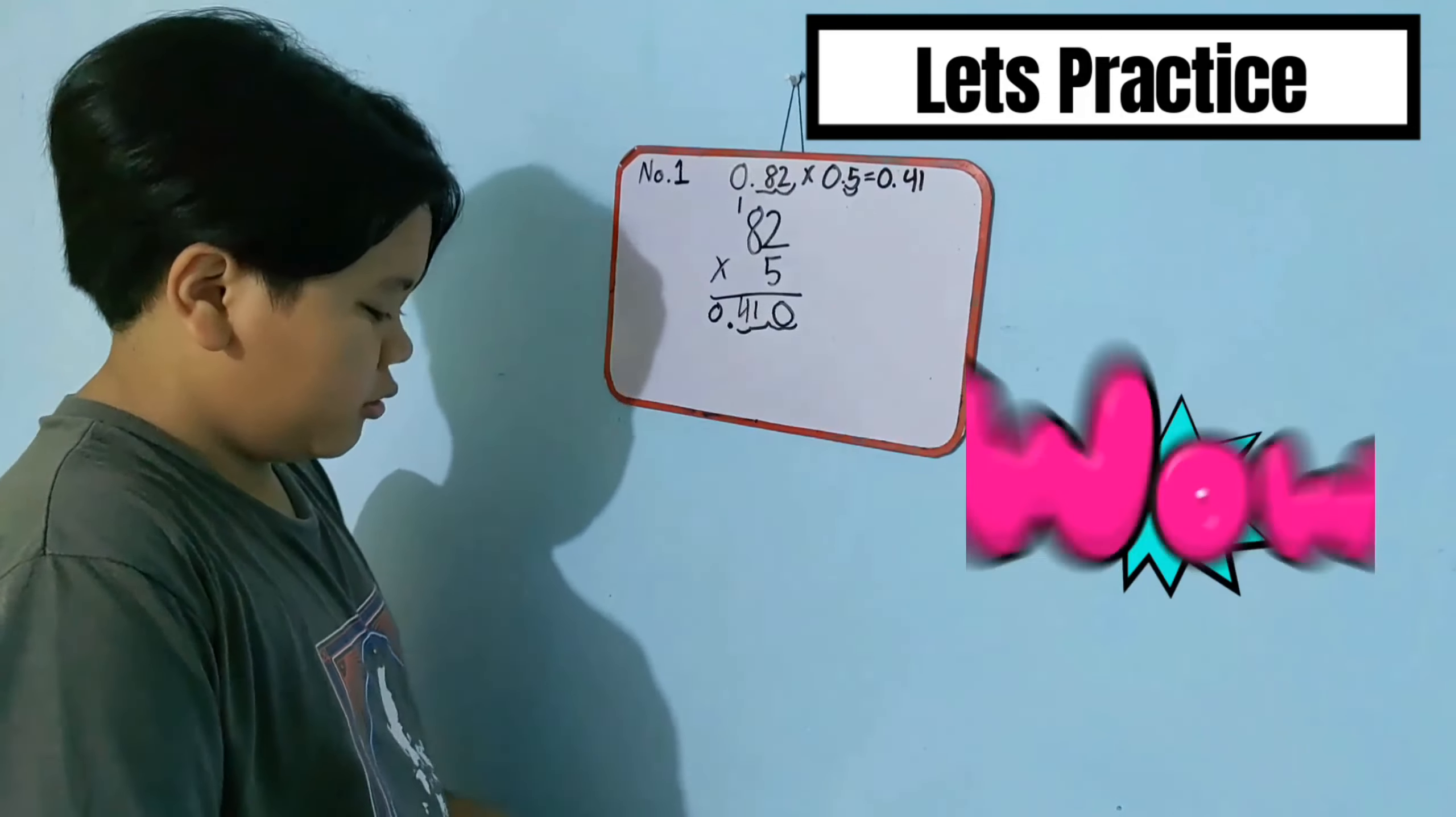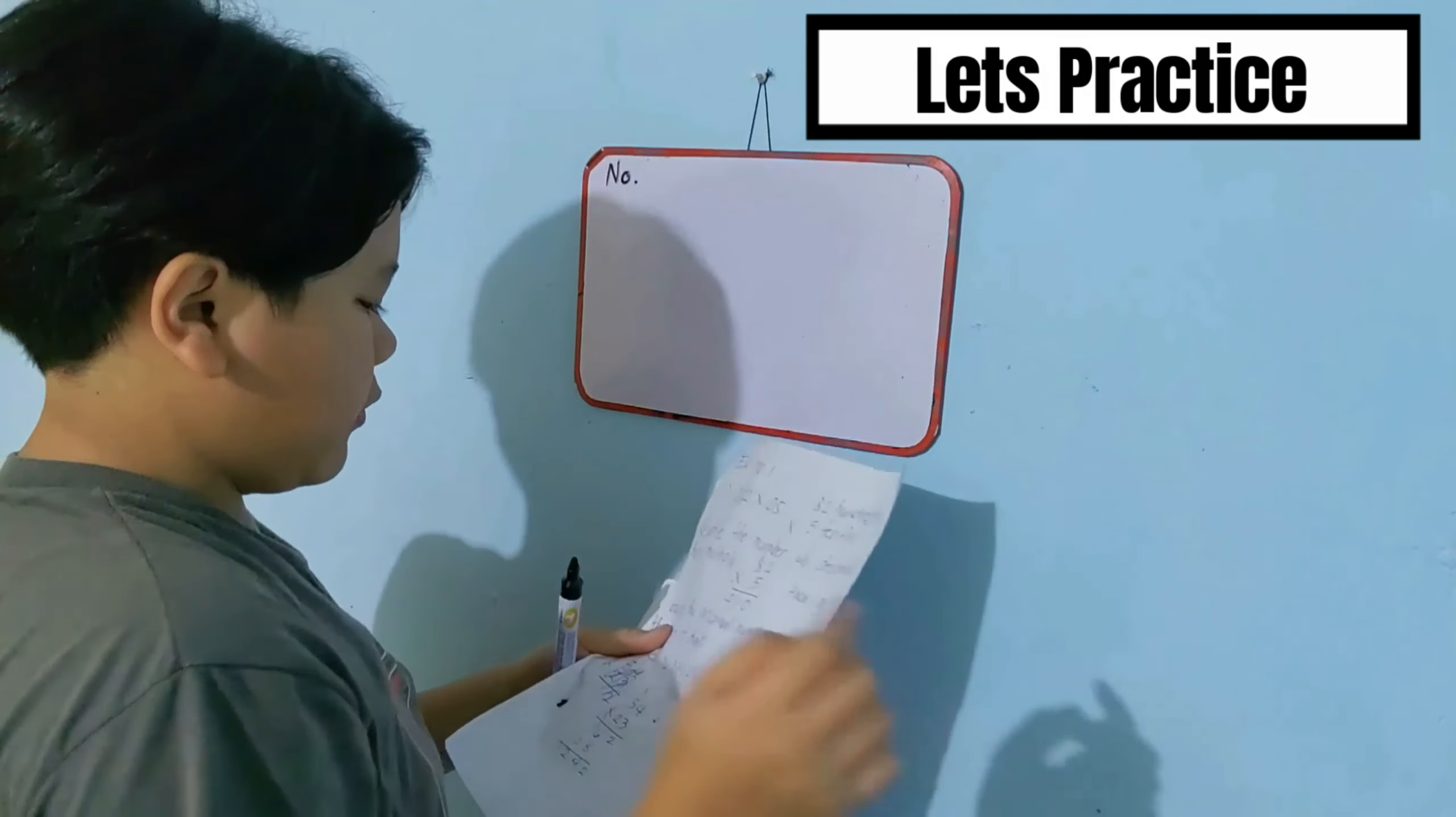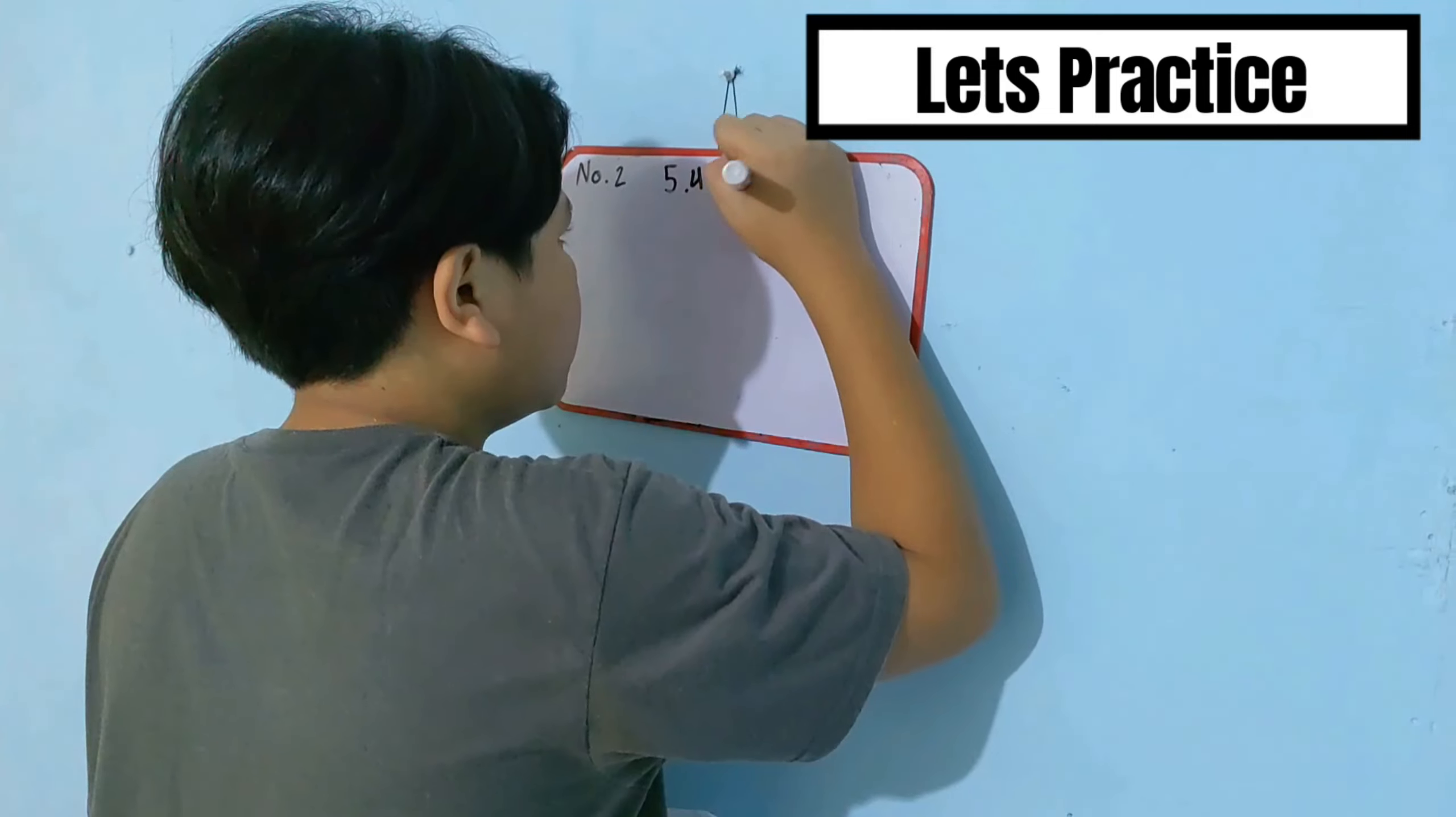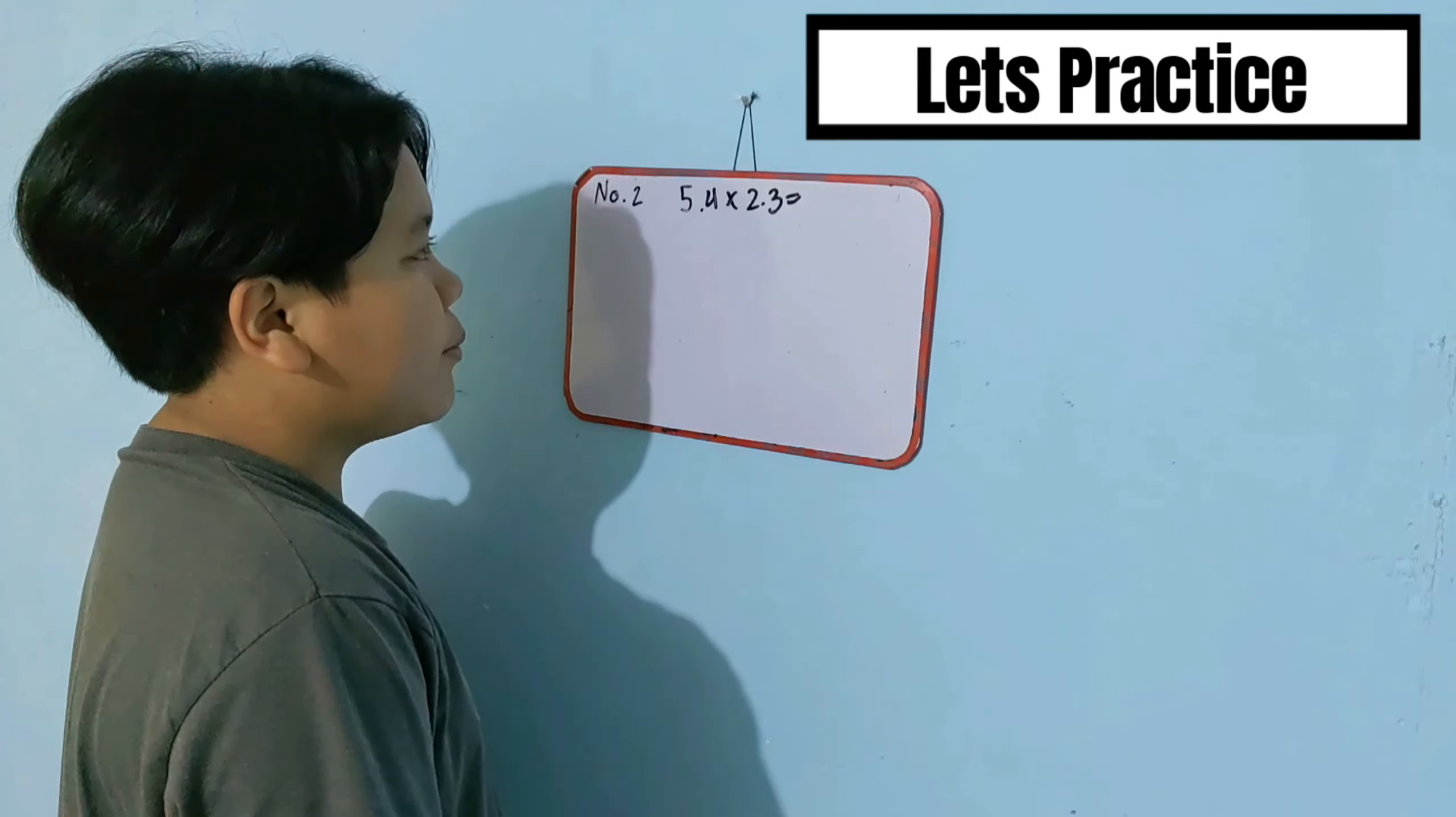Here is another example. 5.4 times 2.3, or 5 and 4 tenths times 2 and 3 tenths. Now, write them without decimals then multiply.